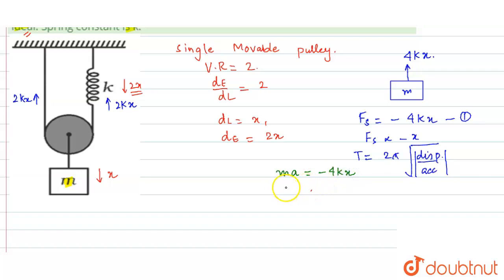Restoring force is simply equals to mass times acceleration and this is equals to minus 4kx. So from here we can find out x divided by a is simply equals to m divided by 4k. And if we take the mod, it will be simply equals to m divided by 4k.